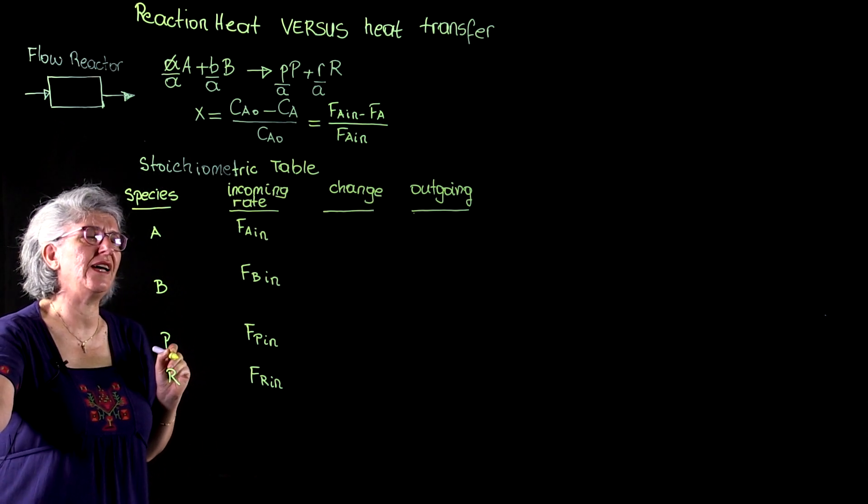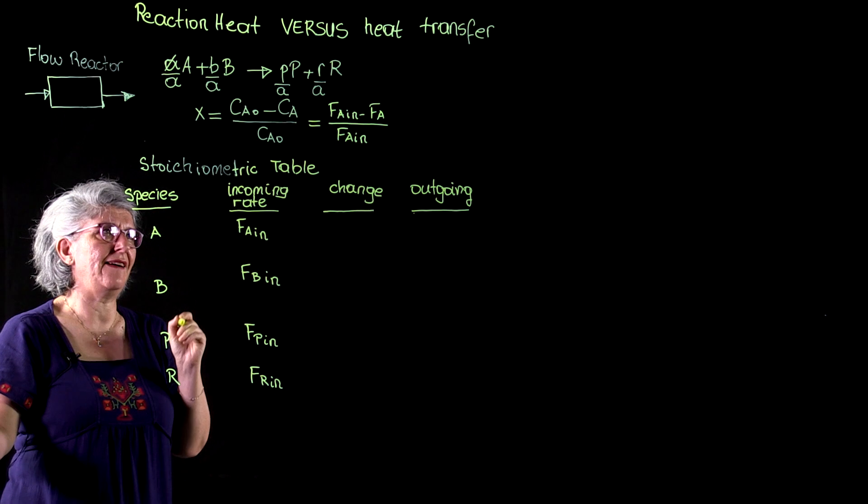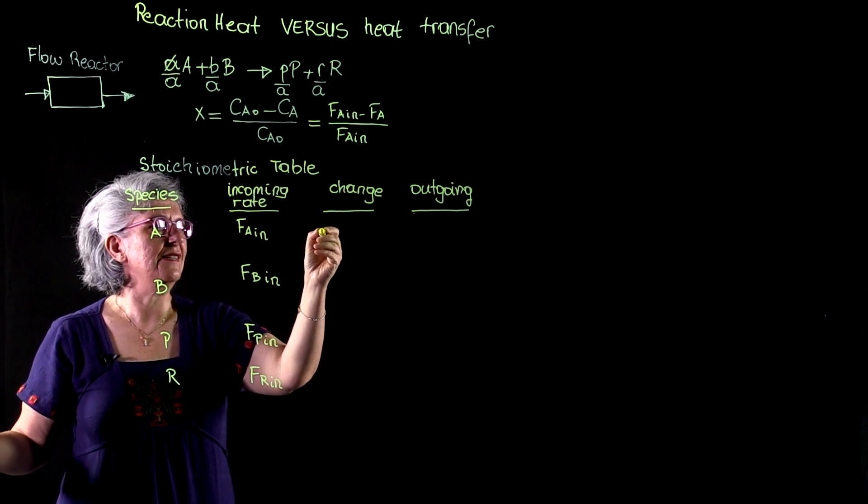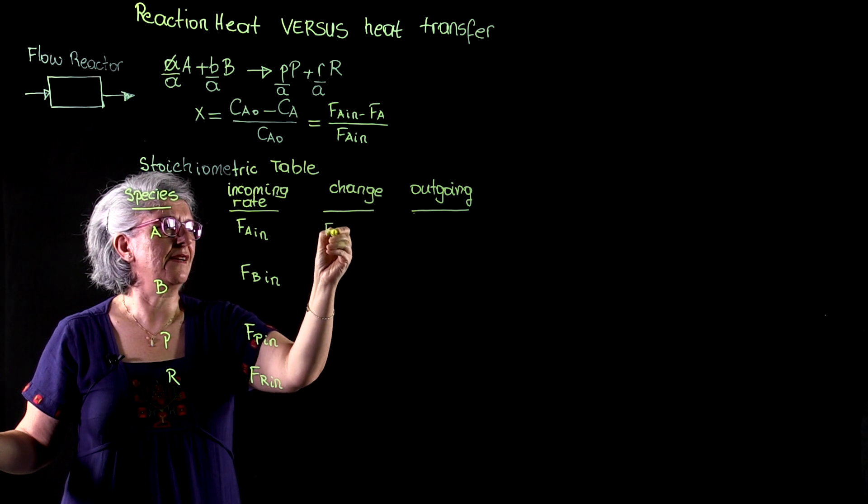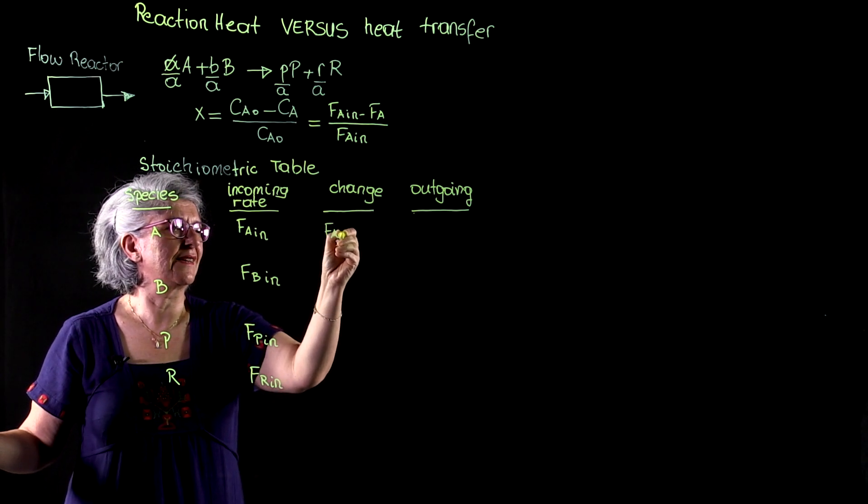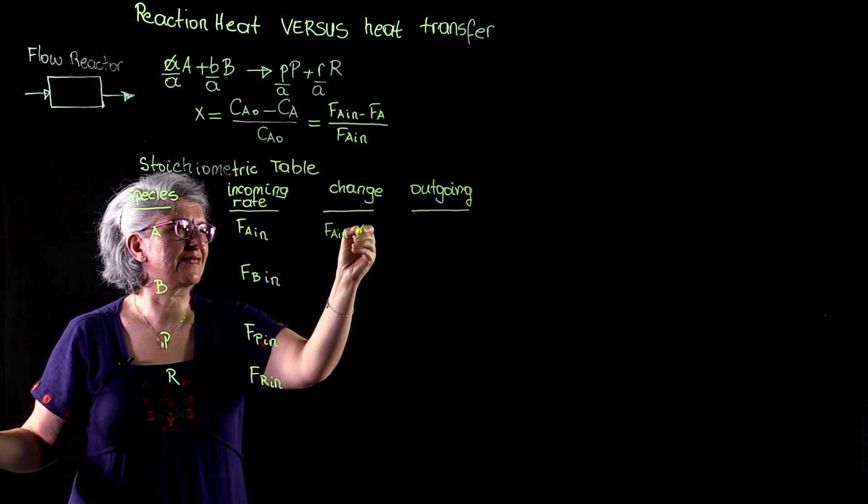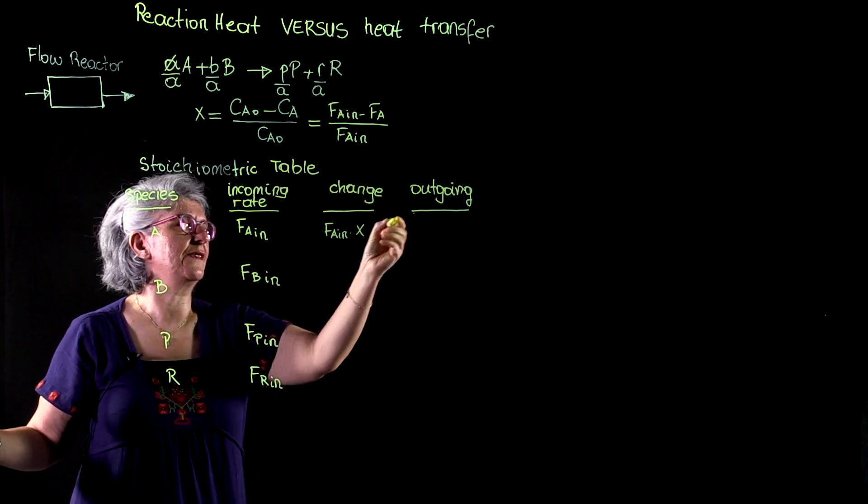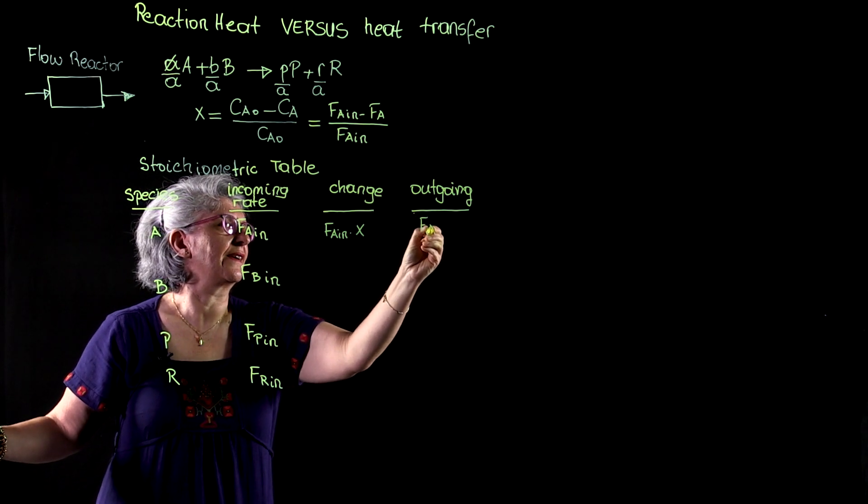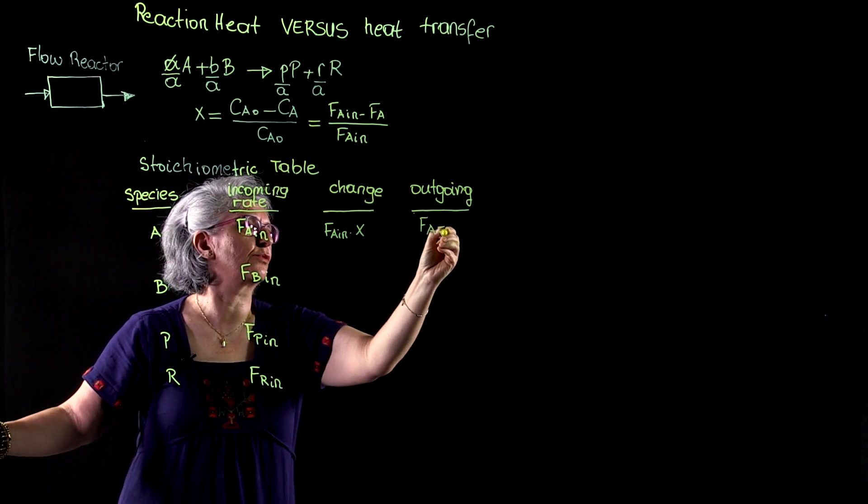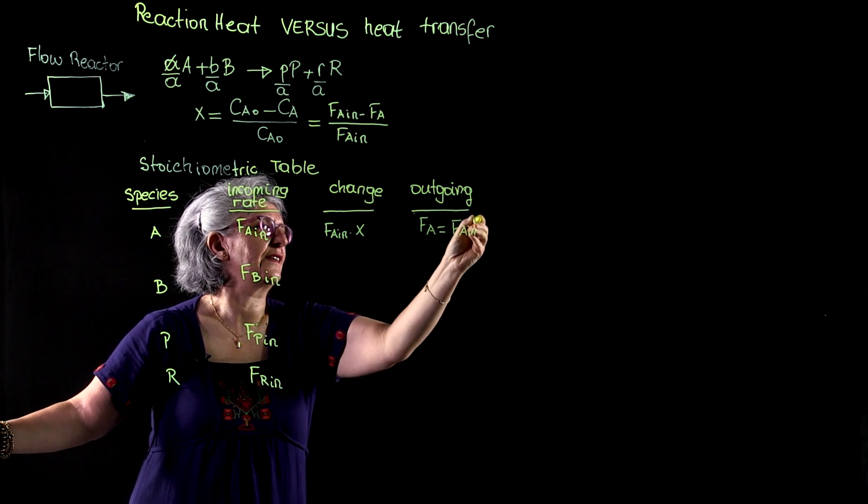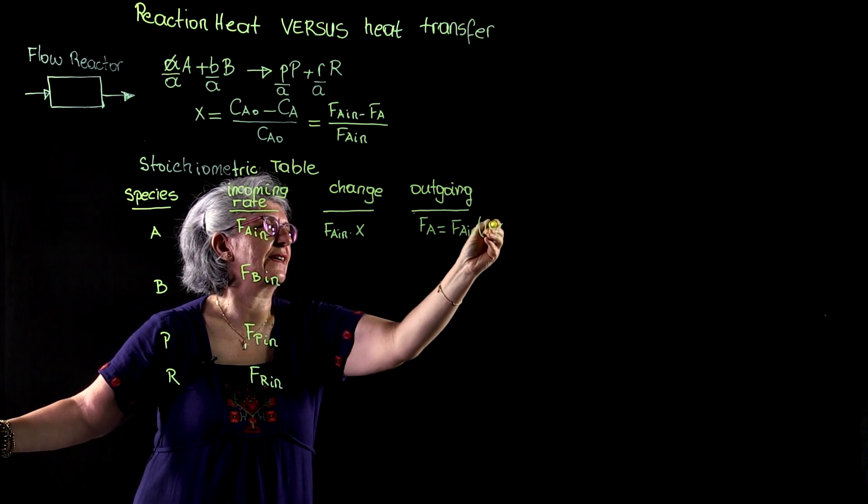So the change that we have for species A is going to be FA in times X. And at the outlet, we have FA, and FA is equal to FA in times 1 minus X.